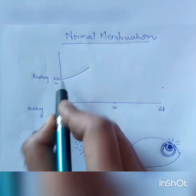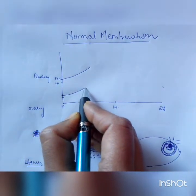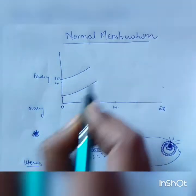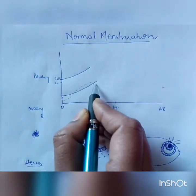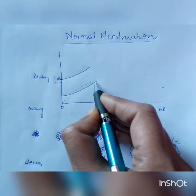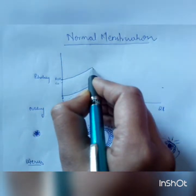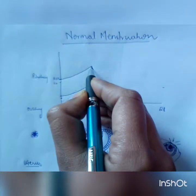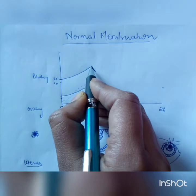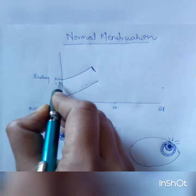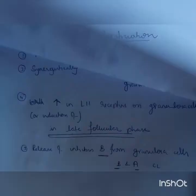As FSH increases, estrogen is going to increase, and inhibin is going to increase as well. Because of this increase, there is a small fall in FSH, because estrogen and inhibin both give negative feedback to the pituitary to decrease gonadotropins.